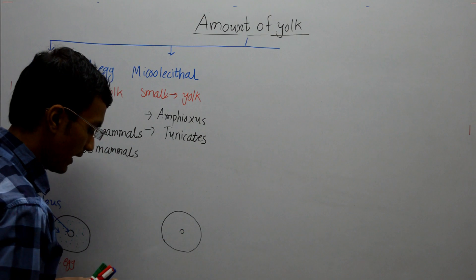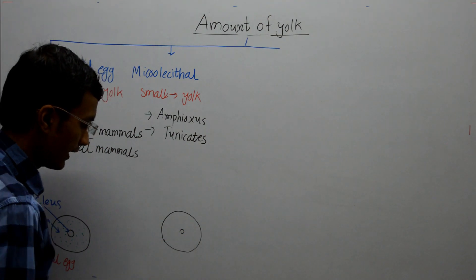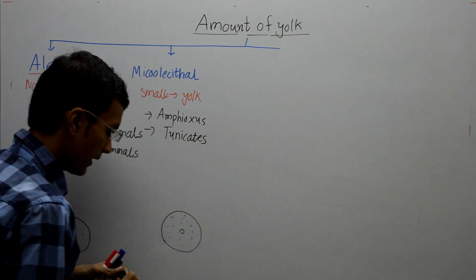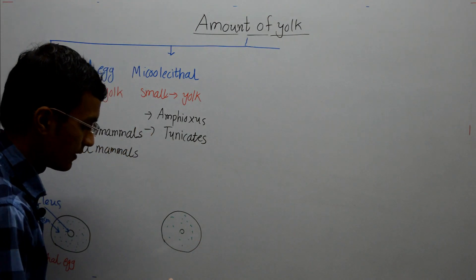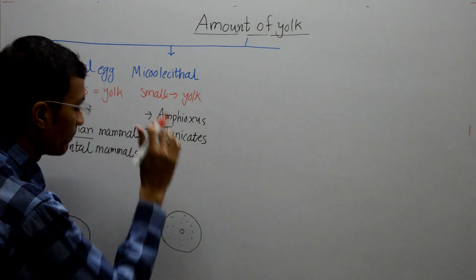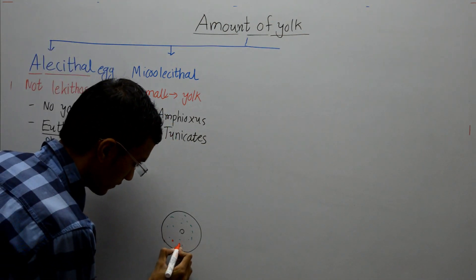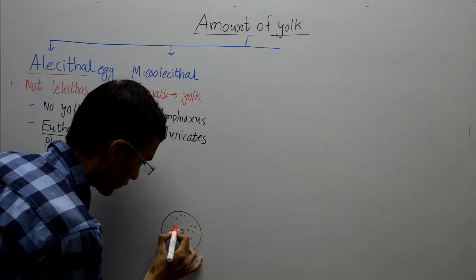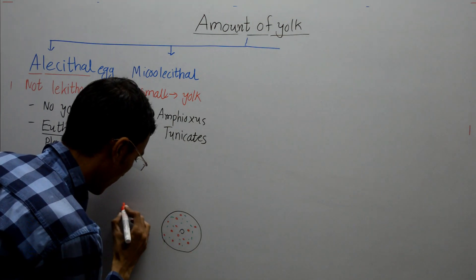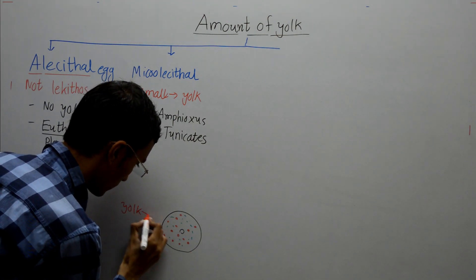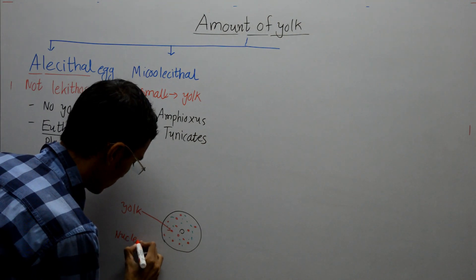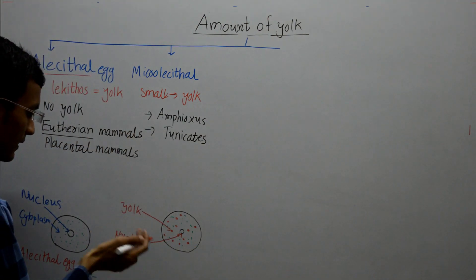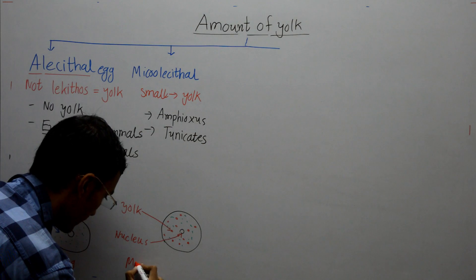The microlecithal egg has cytoplasm and a small amount of yolk present. This is the microlecithal type of egg.